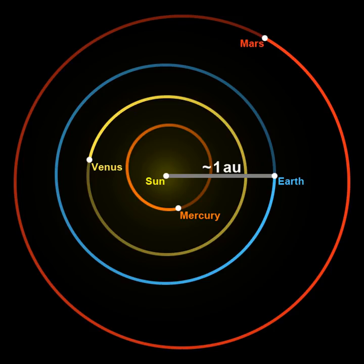According to Archimedes in the Sand Reckoner, Aristarchus of Samos estimated the distance to the Sun to be 10,000 times Earth's radius. However, the book on the sizes and distances of the Sun and Moon, which has long been ascribed to Aristarchus, says that he calculated the distance to the Sun to be between 18 and 20 times the distance to the Moon, whereas the true ratio is about 389.174. The latter estimate was based on the angle between the half-moon and the Sun, which he estimated as 87 degrees.